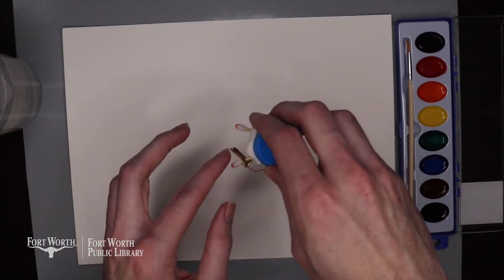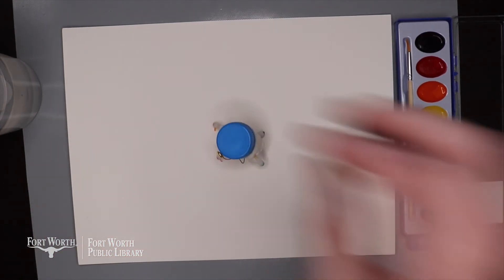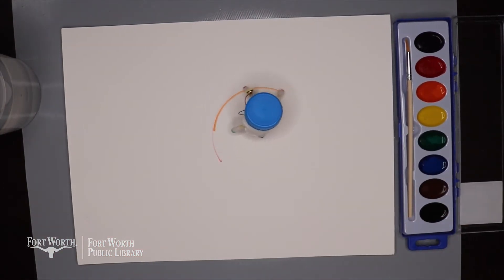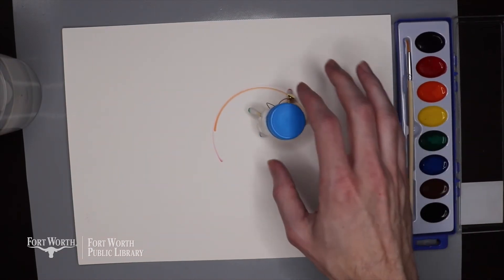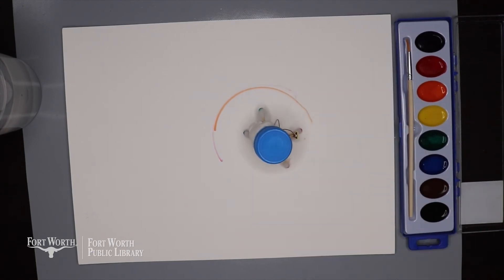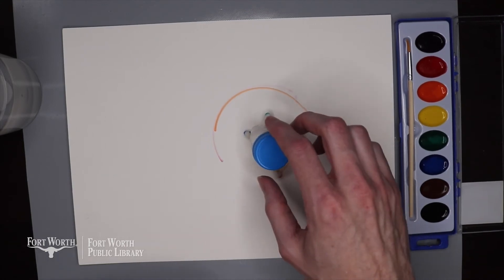Alright, here we go. Here's the first test. I'm going to go ahead and turn it on and then put it down on my paper. Looks like it's kind of gotten stuck there. Let me see if I can push it around a little bit. Alright, let me tinker with it a little bit.